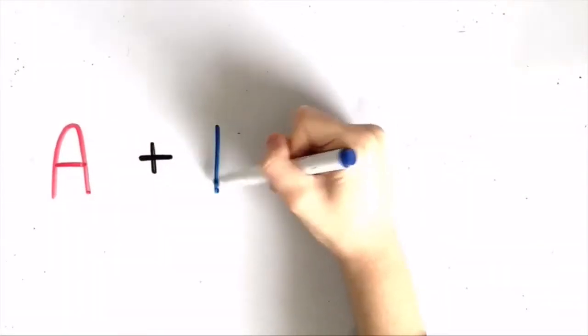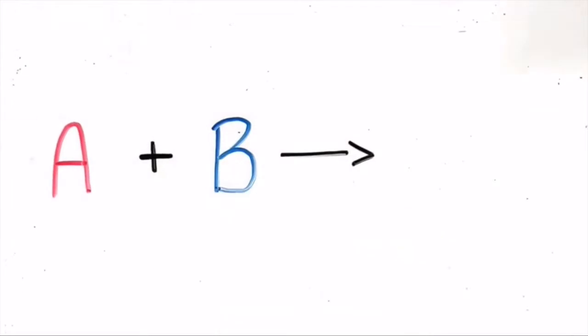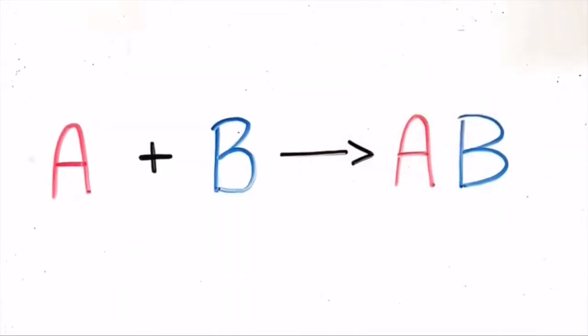We use the formula A plus B yields AB to represent a synthesis reaction. There are three main types of synthesis reactions.